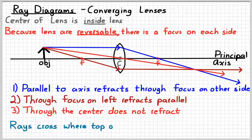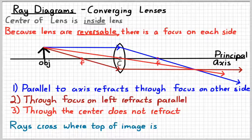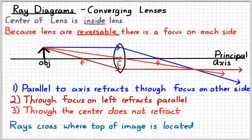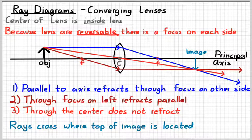And so just like before, where the rays cross tells us where the top of the image is. The bottom of the image would be along the principal axis. And so that's what our image looks like for this particular situation. Because the rays of light physically cross, that would be a real image. And because the image arrow points upside down, we would say that it is inverted. It's below the principal axis.